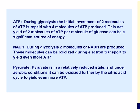Regarding ATP: glycolysis requires an initial investment of two molecules of ATP, but gains four molecules, giving a net gain of two ATP molecules. Two molecules of NADH are also produced. Each NADH can lead to the production of three ATP molecules during oxidative phosphorylation, so two NADH yield six ATP molecules. Finally, pyruvate is in a relatively reduced state, and under aerobic conditions it can be oxidized further by the citric acid cycle to yield even more ATP.